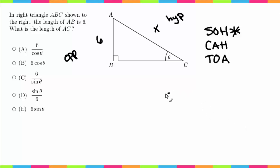So now we're going to go ahead and set up our equation, which says that sine of theta is equal to opposite, which is 6, over hypotenuse, which is X. And we're going to solve for X. So to do that, we're going to multiply by X on both sides.